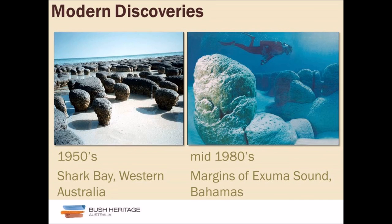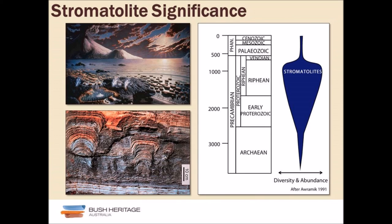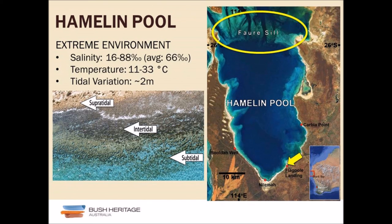Why do they exist in Hamlin Pool? For the same reason they disappeared elsewhere — Hamlin is an extreme environment. The average salinity is 66 parts per thousand, about twice the 35 parts per thousand of normal ocean water. Readings range as low as 16 parts per thousand up to 88 parts per thousand. Temperature ranges from 11 to 33 degrees centigrade over the year — a 22-degree range, far exceeding the roughly 7-degree range a coral can tolerate.